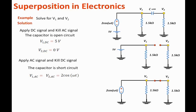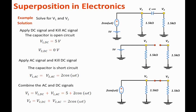The last step is to combine the AC and the DC responses. So we can say that V1 will equal to V1 DC plus V1 AC. That will equal to 5 volts plus 2 times cosine omega t. And V2 is equal to V2 DC plus V2 AC, and that will equal to 0 plus 2 cosine omega t, which is the same as 2 cosine omega t.